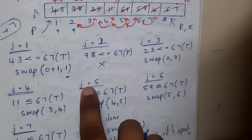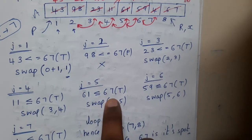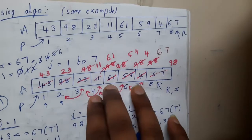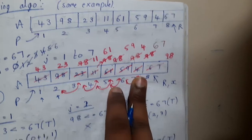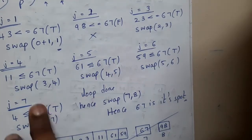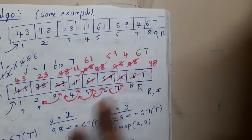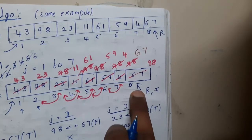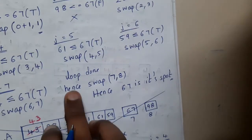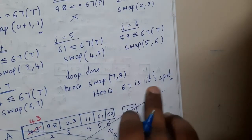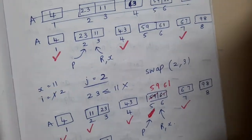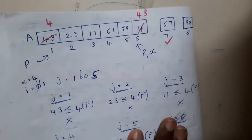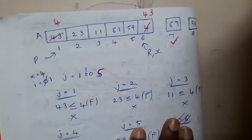For j equal to 5: 61 less than 67 is also true, swapping positions 4 and 5. Slowly you'll be pushing 98 further along. After the loop operations are done, 98 will be in seventh place and 67 in eighth place. At the end you swap positions 7 and 8, so 67 gets its correct spot and 98 is after it. This is the same thing we discussed in the previous lecture, just written in terms of steps.